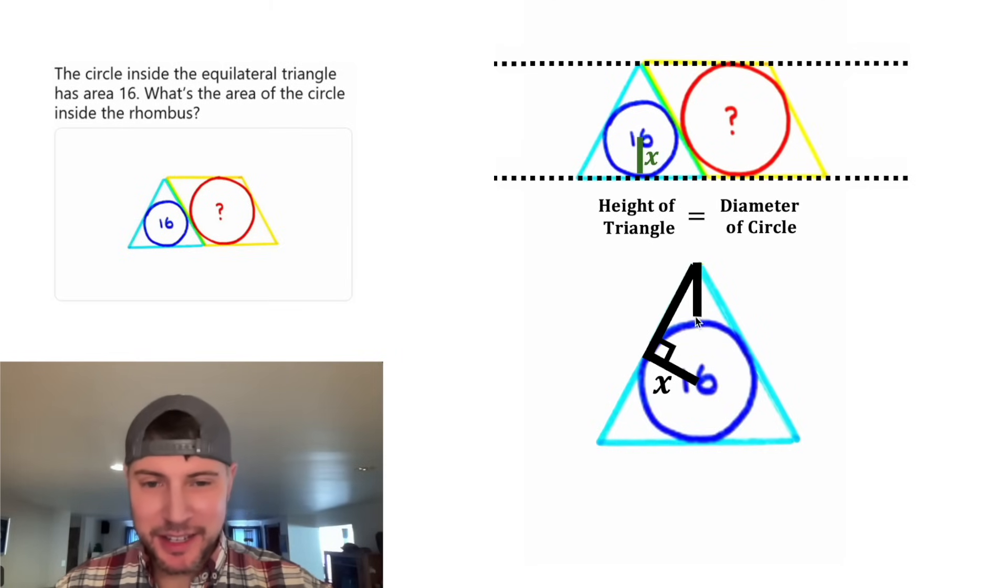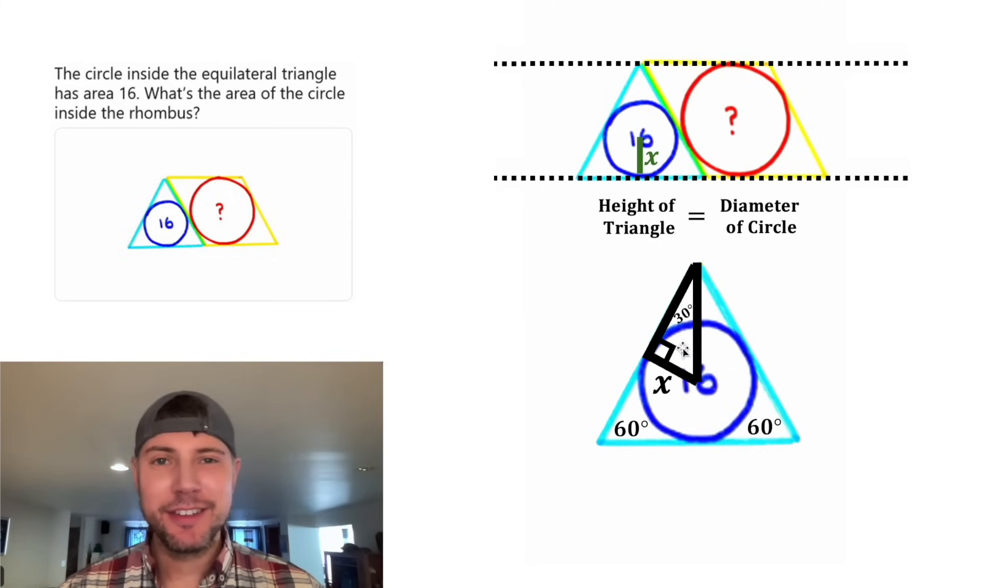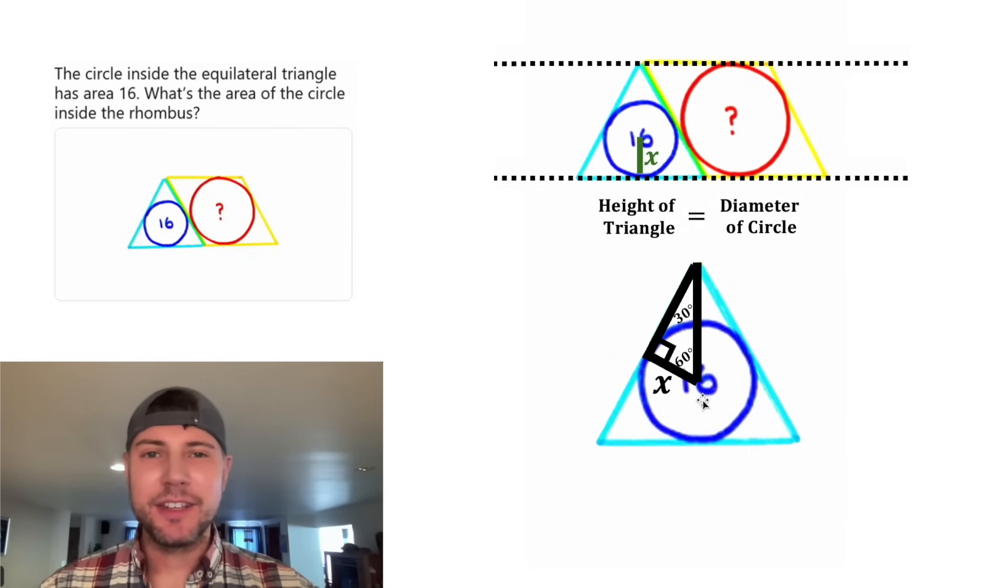And then from this vertex, let's bisect the angle down to the center of the circle. Since this is an equilateral triangle, each of these is 60 degrees. But this one is cut in half, so it's going to be 30 degrees. And inside of this triangle, all three angles have to add to 180, so that leaves 60 degrees for this angle.